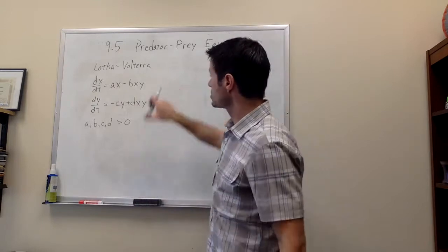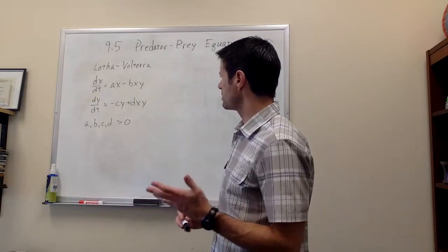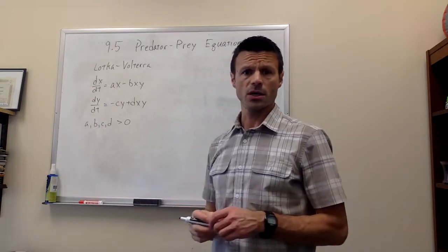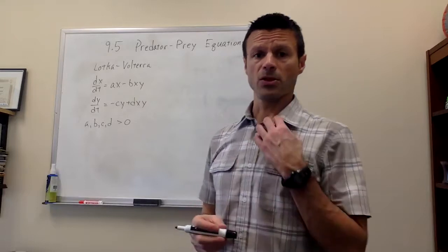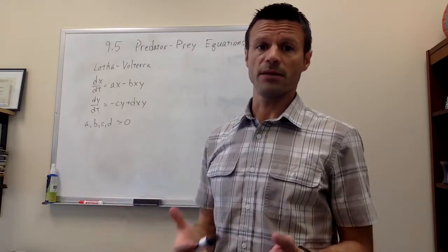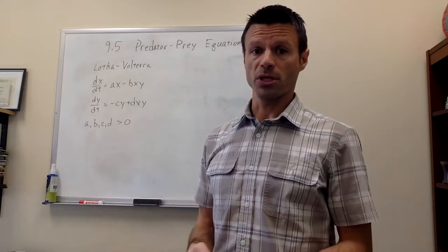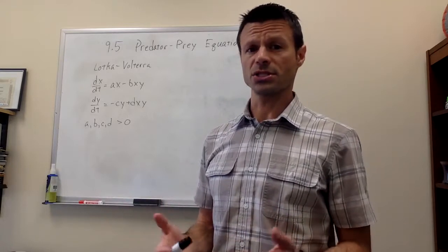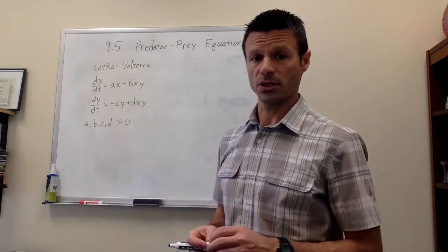So these are the equations, and what we're going to do is look at specific values of A, B, C, and D, and do some analysis that involves finding critical points, computing a Jacobian, and then looking at linear systems that hopefully represent what's going on near those critical points.